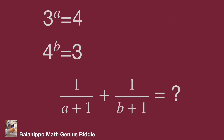We have two given equations: 3 power a equals 4 and 4 power b equals 3. There are 3 and 4 in each equation. We can easily make a connection from them and find the relationship for a and b, then get the value for 1 over (a plus 1) plus 1 over (b plus 1).